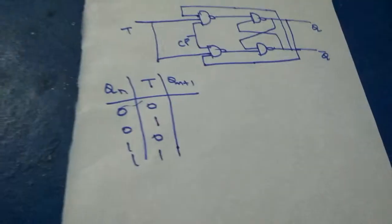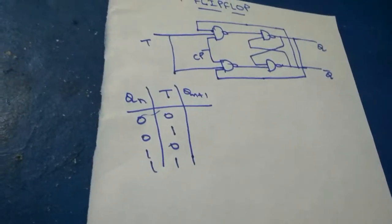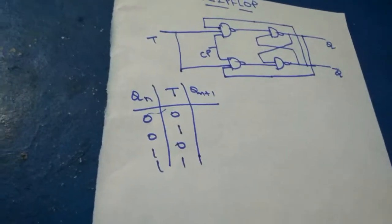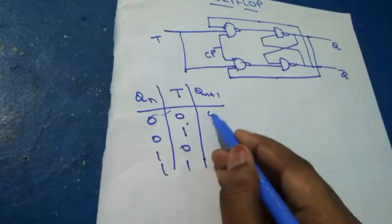The rule of the T flip-flop is whatever is present in the Qn state. That is, at 0 in the present state, whatever is present in T will come as the same.